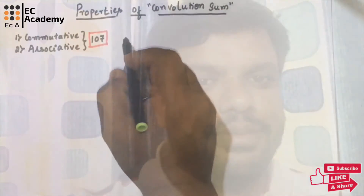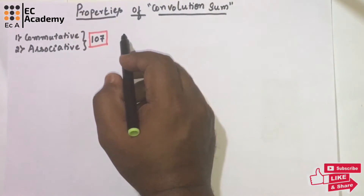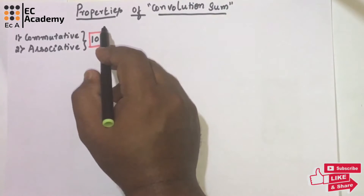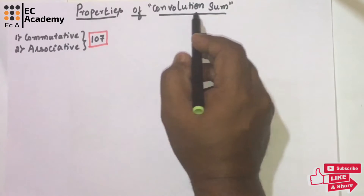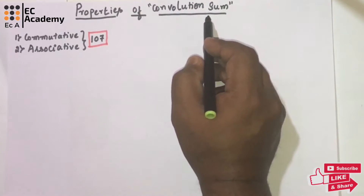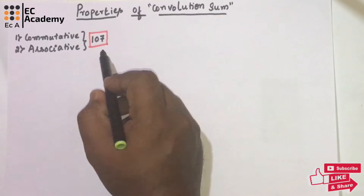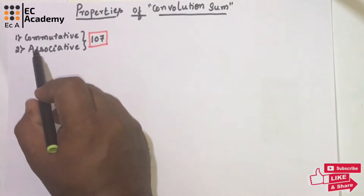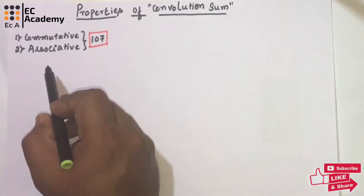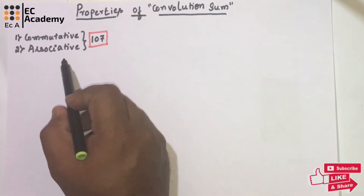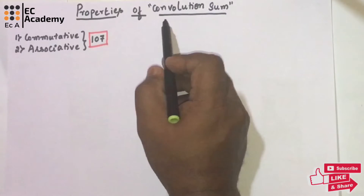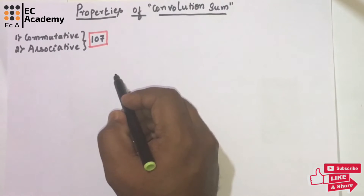Hello friends, welcome to Easy Academy. In this lecture, let us understand the properties of convolution sum. In lecture number 107 we understood the commutative property and associative property of convolution sum, so in this lecture we will continue with the remaining properties.